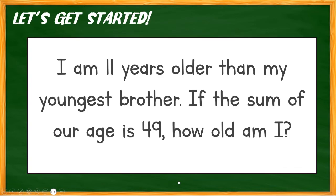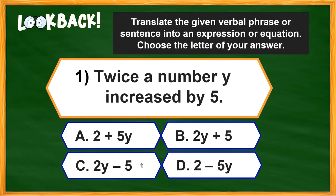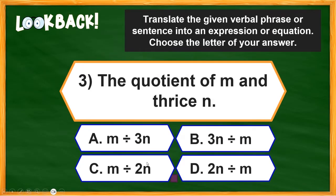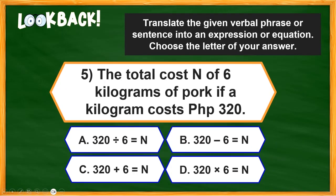For number one, the correct answer is Letter B. For number two, the answer is Letter B. The correct answer for number two is Letter C — wait, the correct answer is Letter C. For number three, the correct answer is Letter A. For number four, Letter B — 'three years younger' means less, and 'twice the age of the brother' is 2X. For number five, the correct answer is Letter D.